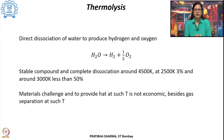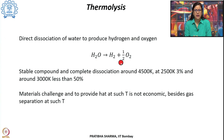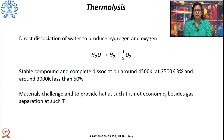Thermolysis involves the direct dissociation of water to produce hydrogen and oxygen, requiring a large amount of heat. Water is a stable, inert compound in a lower energy state, so a lot of heat is required to break it. Complete dissociation occurs around 4500 Kelvin; about 50% dissociation occurs at 2500 Kelvin, and around 3000 Kelvin for further dissociation.